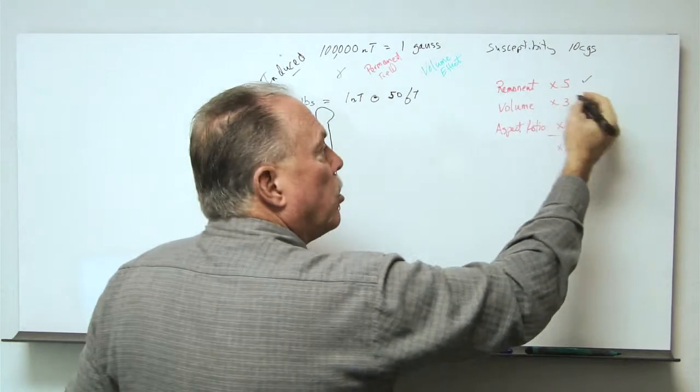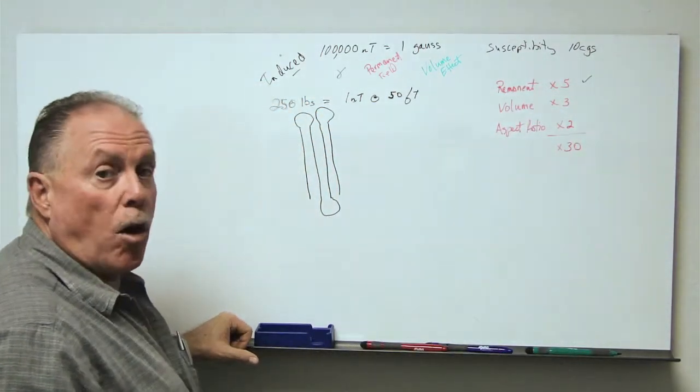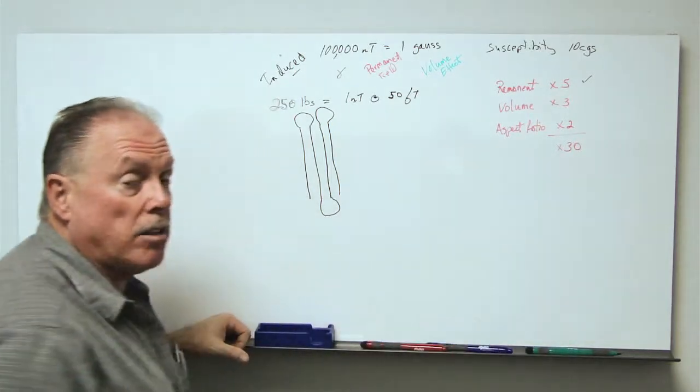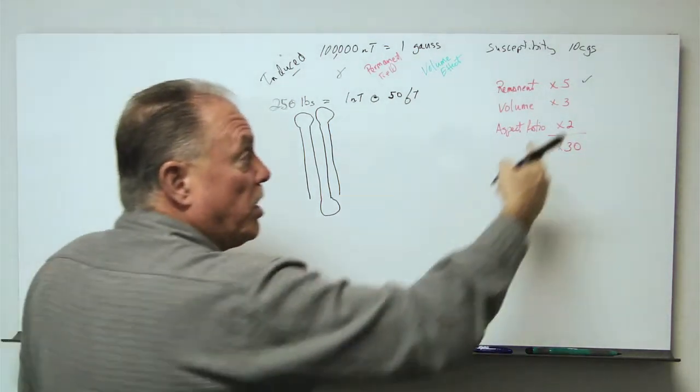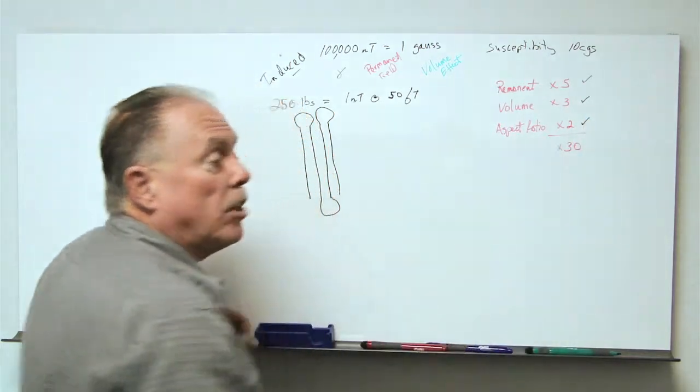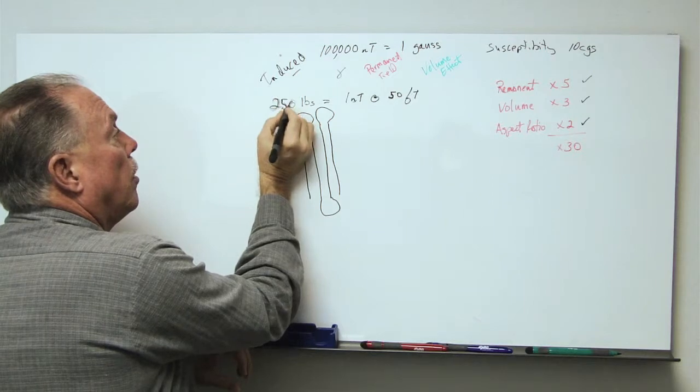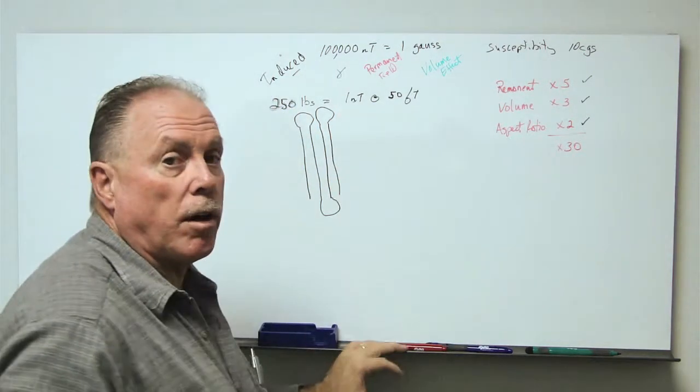So we can't absolutely count on this. We don't know in fact that it has a volume amplifier or that it maybe has an aspect ratio amplifier. We suspect that these may be in play, but let's take the worst case scenario and just work with 250 pounds at 50 feet. So what would be our survey grid?